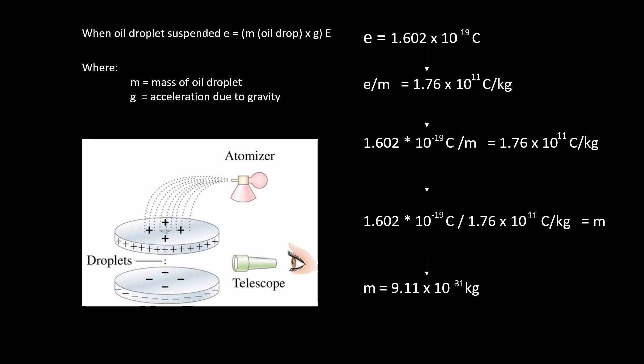Measuring the charge of each droplet, he observed that it was always a multiple of the smallest charge. The accepted value of e was therefore determined to be 1.602 times 10 to the negative 19 coulombs.